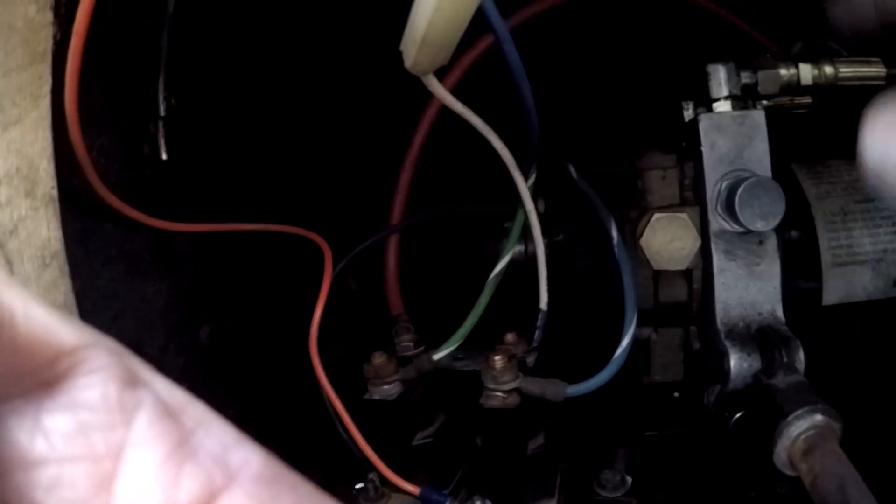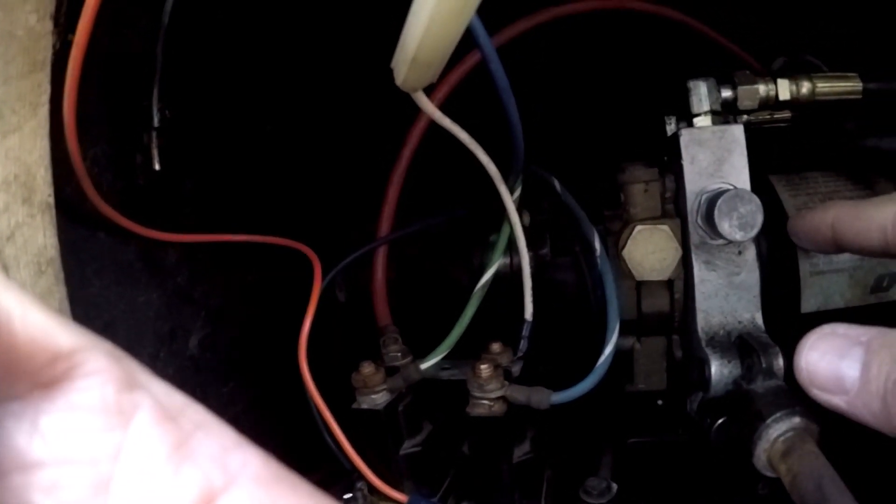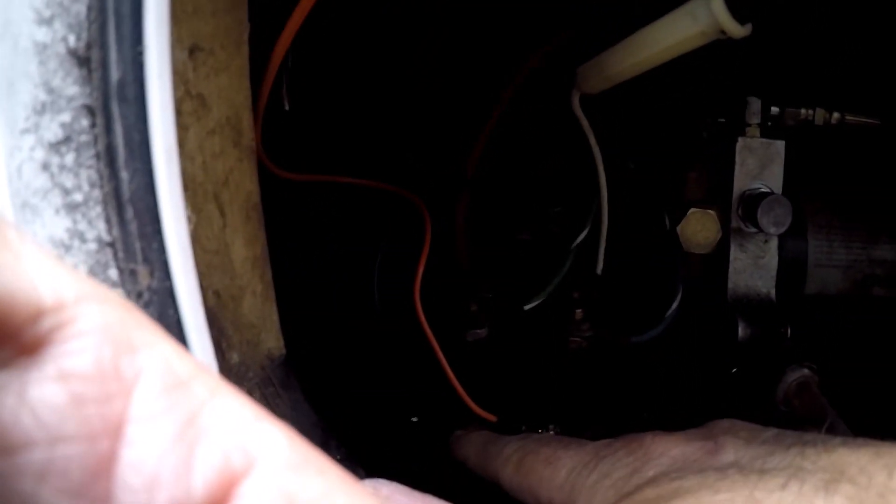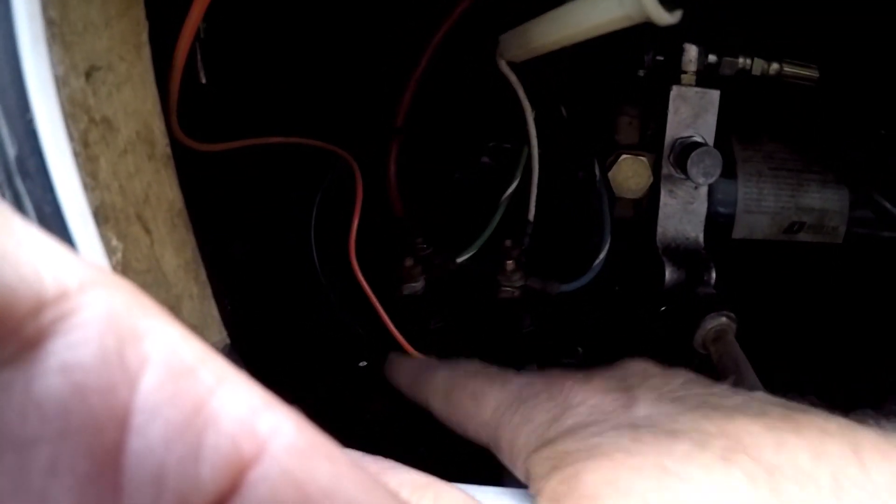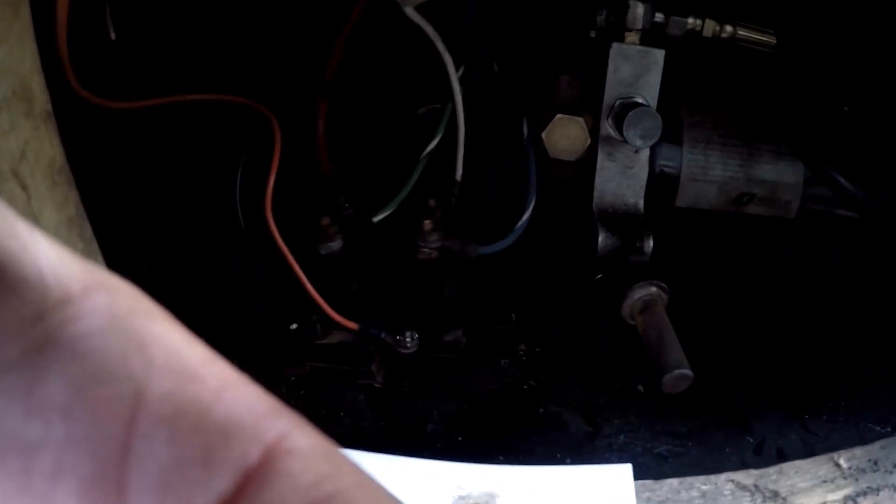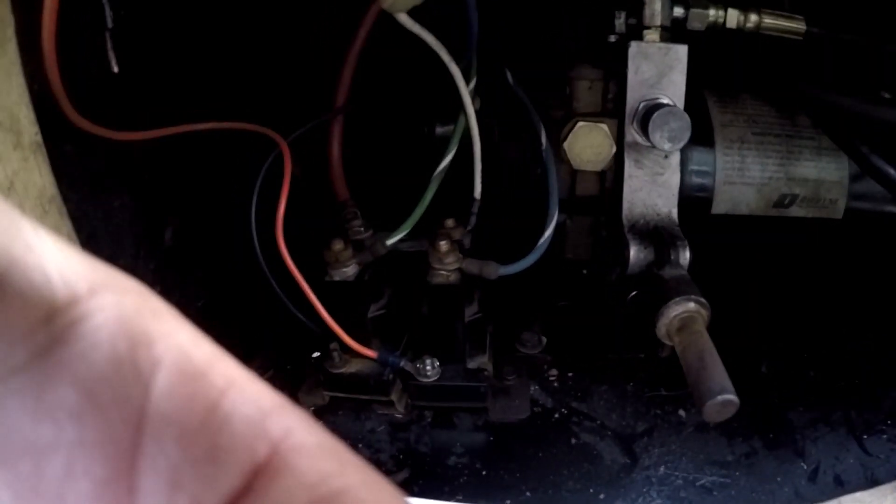All right, and then you have your blue wire here. Just like a regular solenoid, you have your smaller DC wires going to these posts here, and those go to your switch.